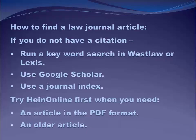If you don't have a citation — say you just want to find out about cruel and unusual punishment law — you can run a keyword search in Westlaw or Lexis. You can do the same thing in Google Scholar. You can use a journal index, which I'm going to talk more about in a few minutes, or you could use HeinOnline and either look for a particular journal there or do a keyword search.